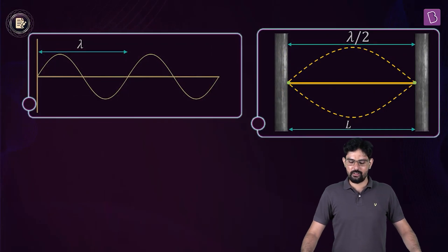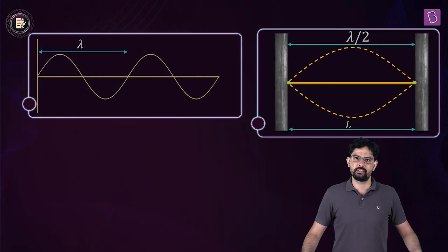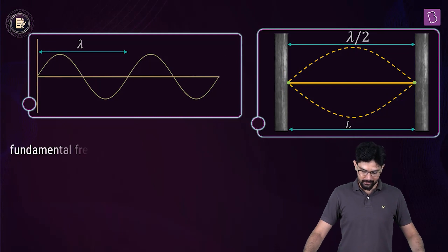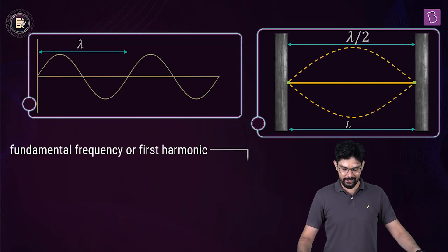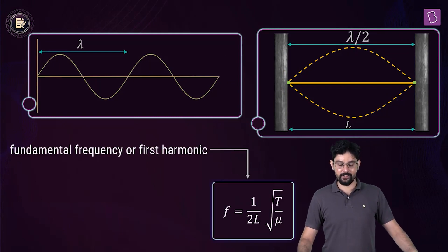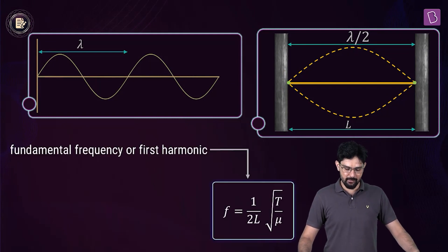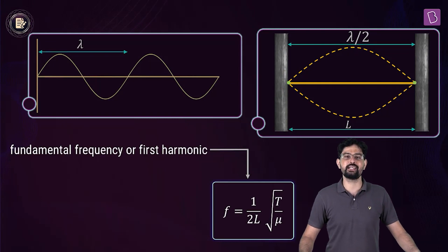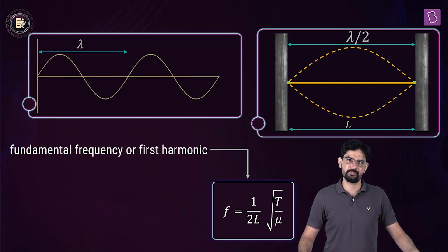For the fundamental mode, the fundamental frequency is given by f = 1/(2L) × √(T/μ).